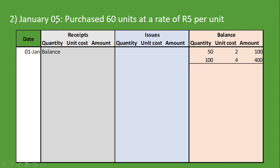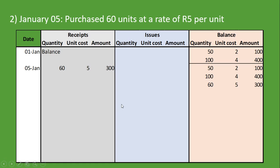The second transaction: on January 5th we purchased 60 units at 5RN per unit. Since inventory is coming into our business, we put it under receipts — 60 units at 5RN per unit, equalling 600RN total. Under balances, because we're using the perpetual method, we update all inventory in stock: 50 units at 2RN per unit, 100 units at 4RN per unit, and the newly purchased 60 units at 5RN per unit.